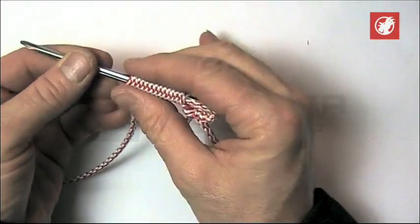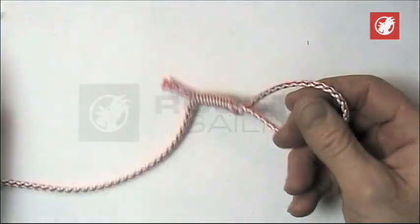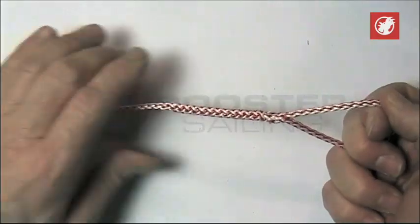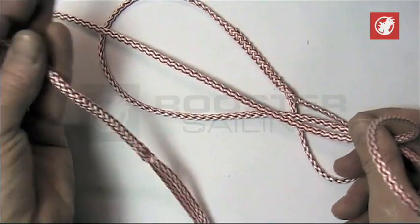There we go. We're on the barb now, so it should be nice and safe. Pull it through, pull it tight, and then hide the cover. It's all finished. We've now got two loops in this piece of rope.